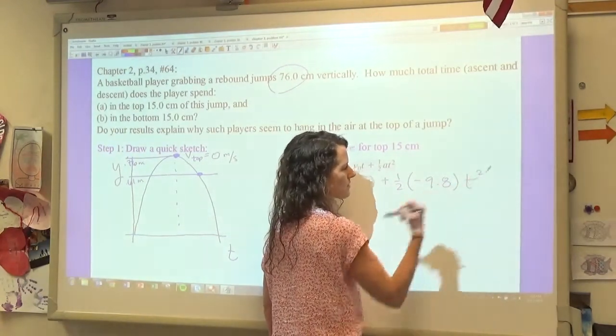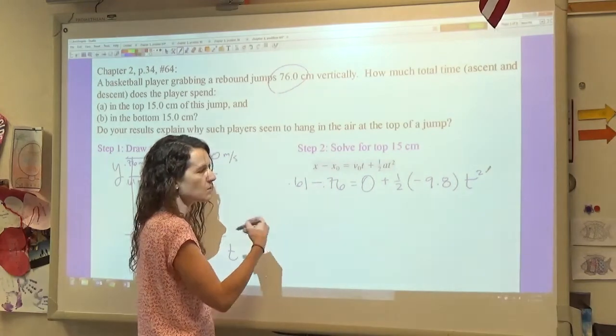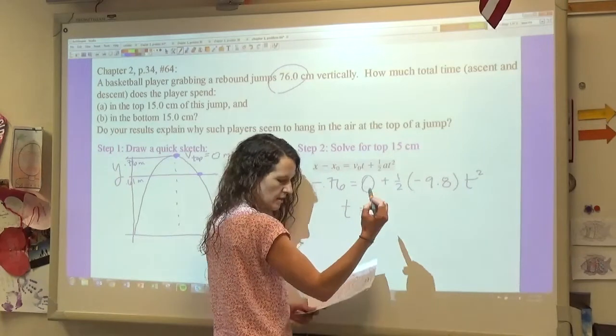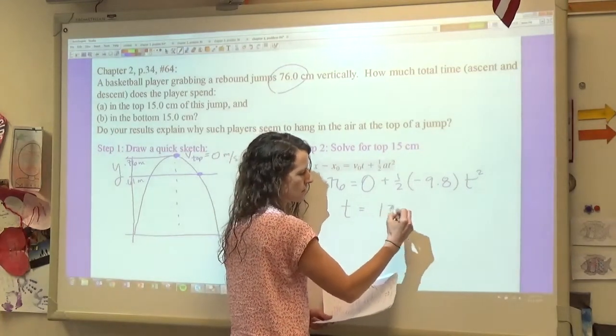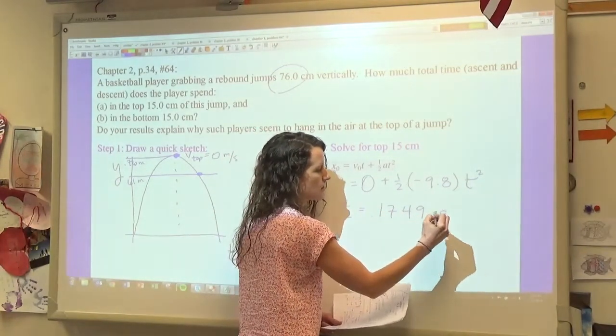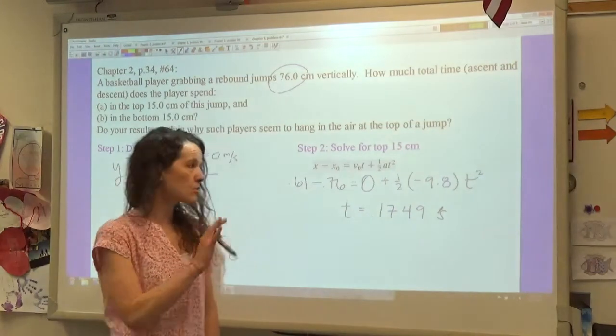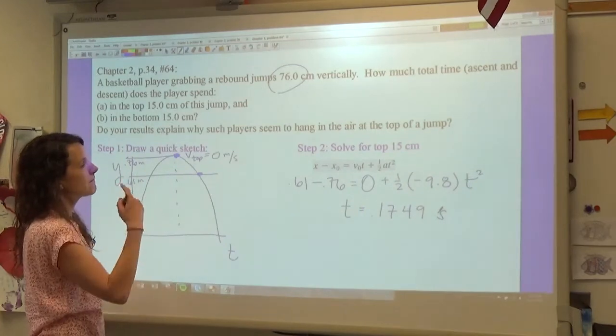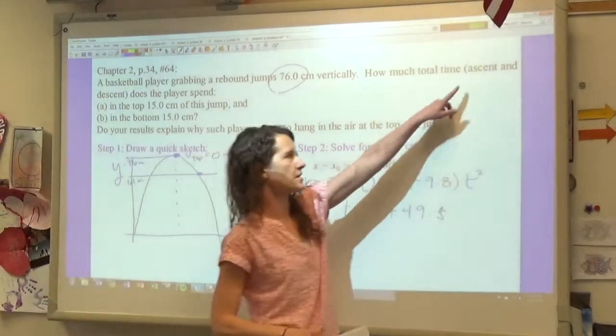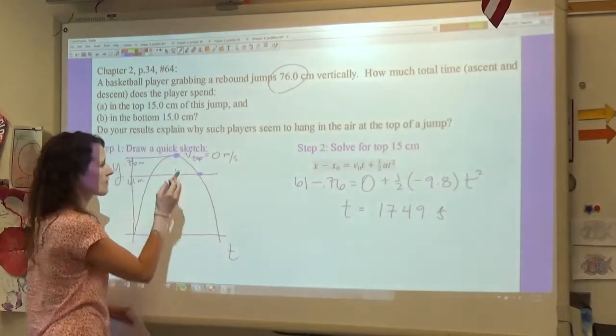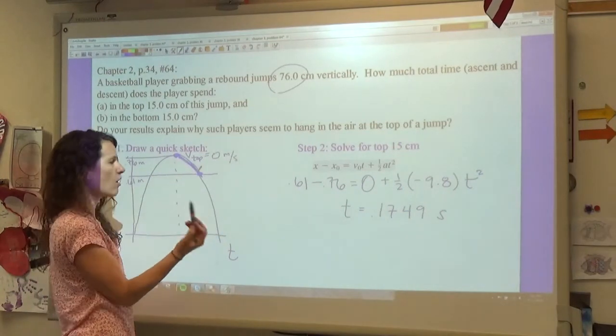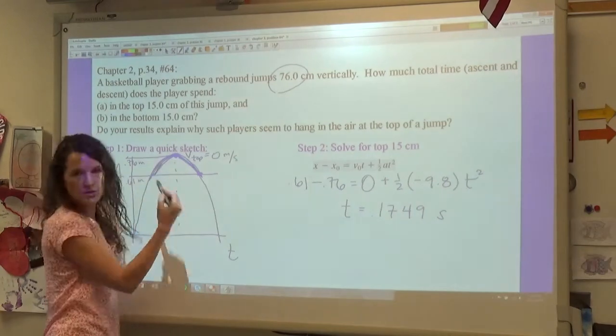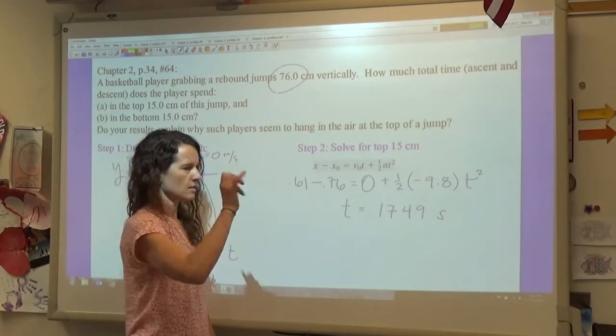If we work this out mathematically, we're going to find out that this time that we're solving for is 0.1749 seconds. However, this isn't quite the answer to part A because part A is wondering the top 15 centimeters of the jump, but it's talking about the ascent and the descent. And so right now we've only solved for this piece, so all we need to do is multiply this number by two, and then that will also include what happened on the symmetric side there.